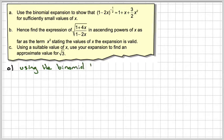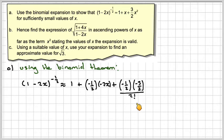Okay, so using the binomial theorem, (1 - 2x)^(-1/2) will be 1 plus nx, so that will be plus (-1/2)(-2x), and x being -2x. Next one will be (-1/2)(-3/2) over 2 factorial times (-2x) squared.